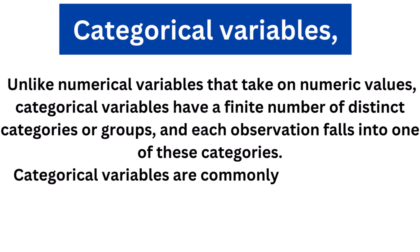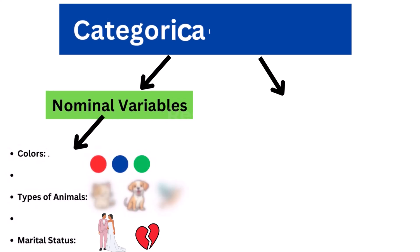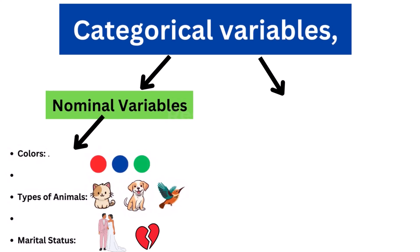Categorical variables are commonly used in statistics and data analysis to classify data into meaningful groups. There are two main types of categorical variables. Nominal variables represent categories with no inherent order or ranking.